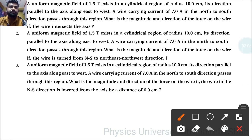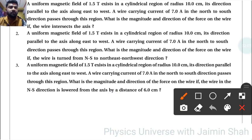What is the magnitude and direction of the force on the wire if the wire in the north-south direction is lowered from the axis by a distance of 6 centimeter? So to find new length, the formula is L2 by 2 square is equal to 4 D plus R. We need to find L2 here.